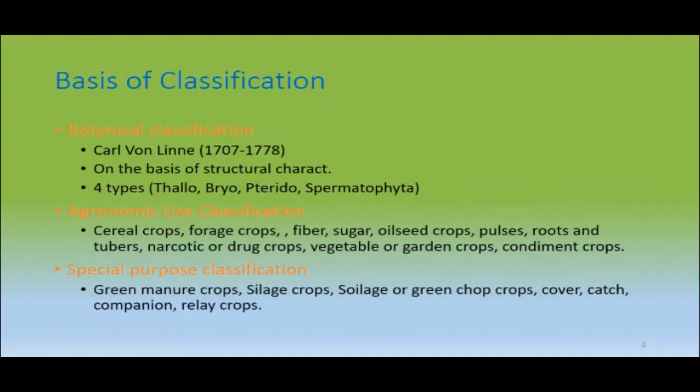There are different bases of classification. The most important one is botanical classification — that is by Colgon — and that is on the basis of structural characteristics of the feedstuff. The botanical classification has four main types: thallophyte, bryophyte, pteridophyte, and spermatophyte. Then on the special purpose classification, depending on the area in which the classification is being done, there is the agronomic use classification.